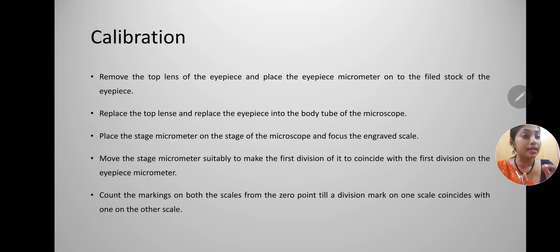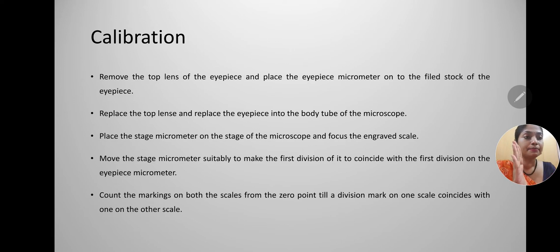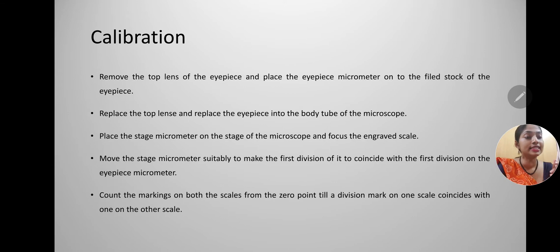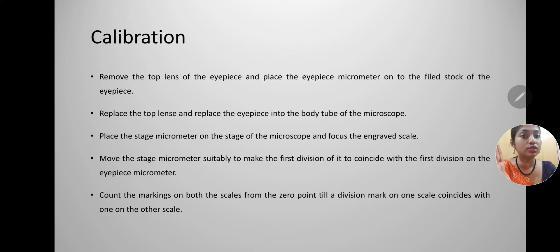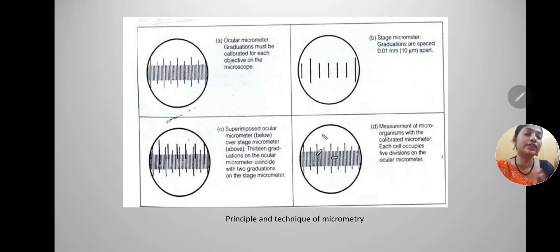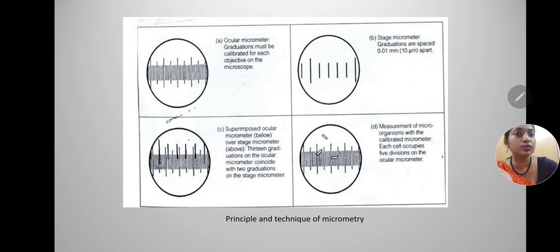Once the first lines coincide, we look for the next point where both scales coincide exactly. We count the number of divisions on both the ocular and stage micrometer between the 0th point and the first coinciding line, and note both values. This is represented pictorially: the ocular micrometer graduations must be calibrated for each objective separately (10x, 45x, etc.), and the stage micrometer divisions are 10 microns apart.